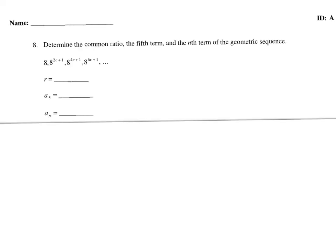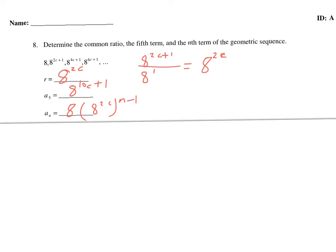Next, find the common ratio first — that's any term divided by the term before it. I'll do a sub 2 divided by a sub 1. Since we divide the same base, we subtract exponents, giving r equals 8 to the power of 2c. For a sub 5, tracking the pattern, a sub 4 would be 8c plus 1, so a sub 5 is 8 to the power of 10c plus 1. For a sub n, it's 8 times 8 to the power of 2c, all to the power of n minus 1.